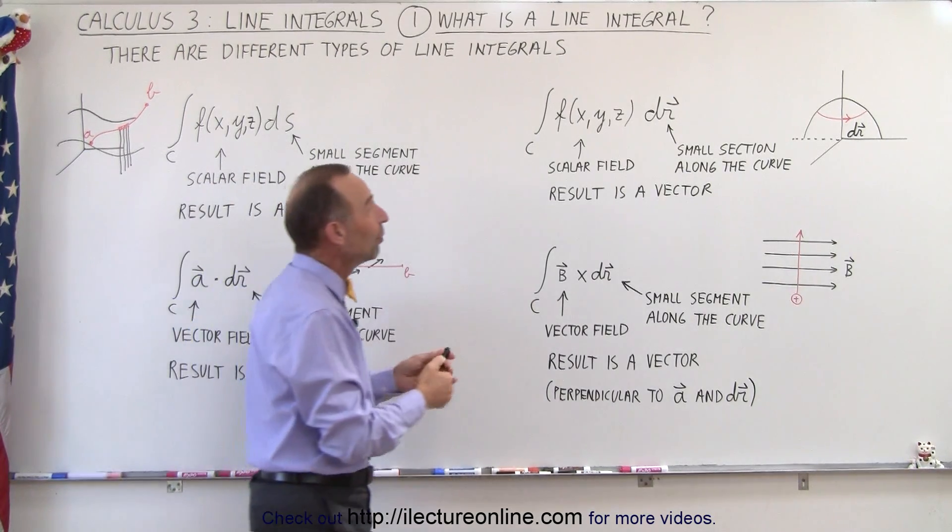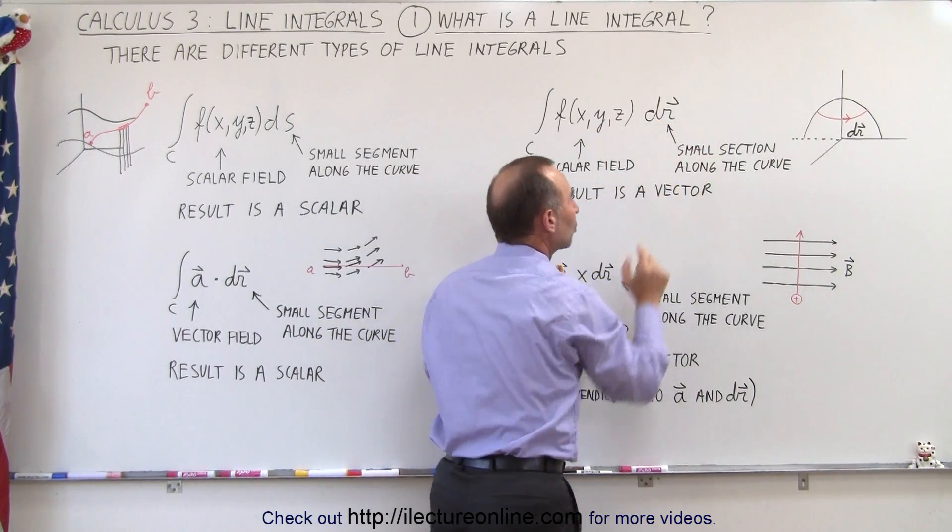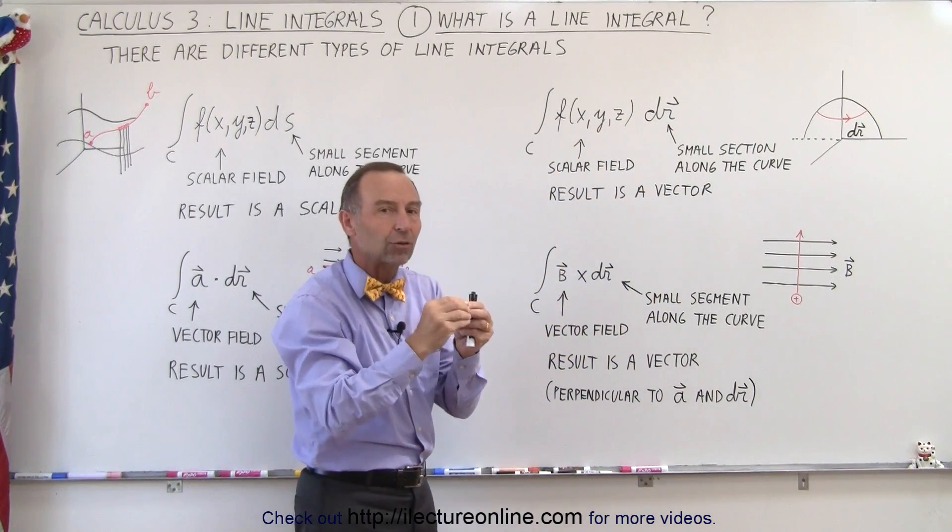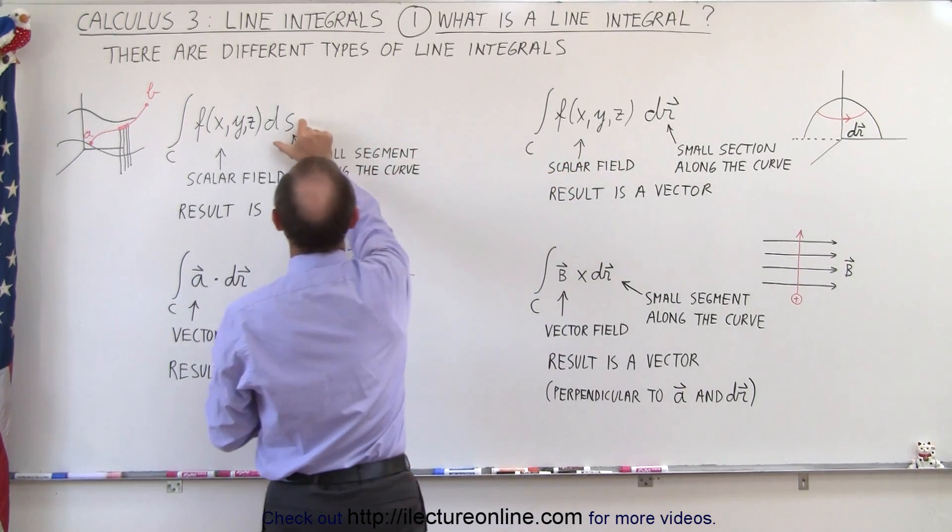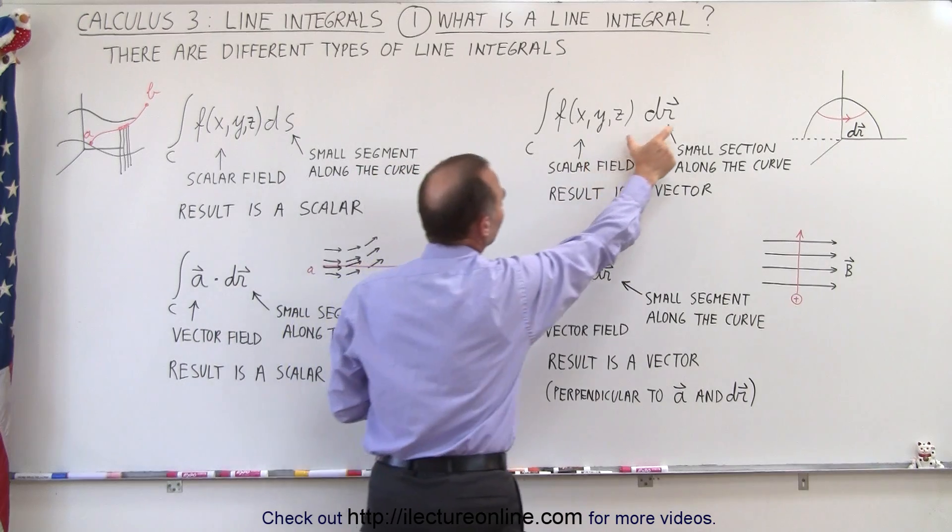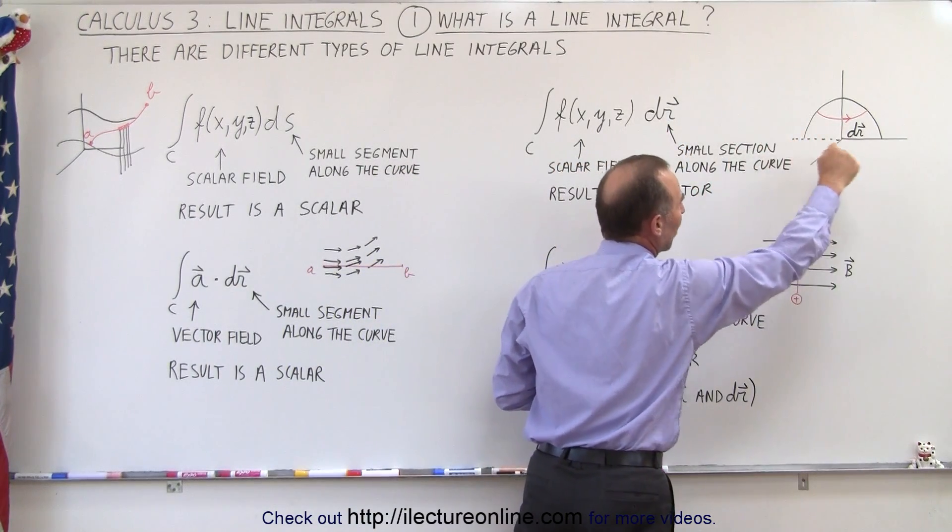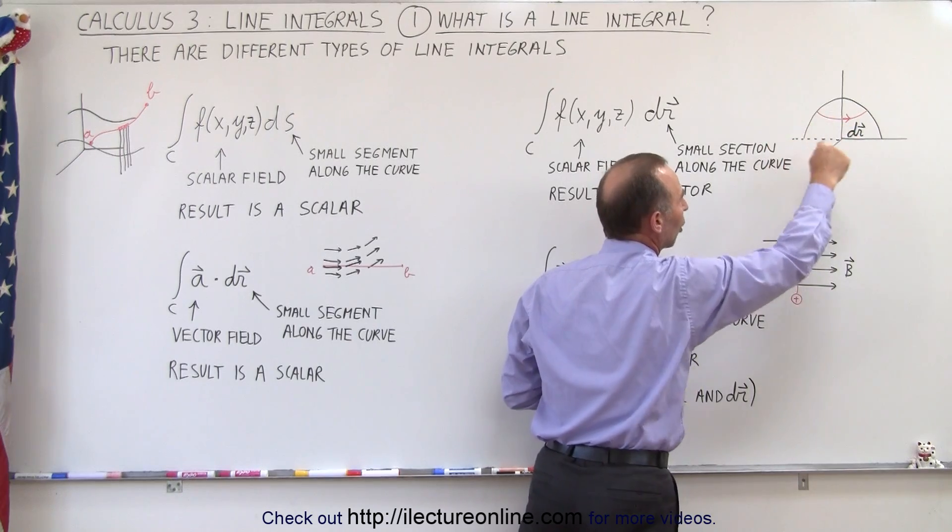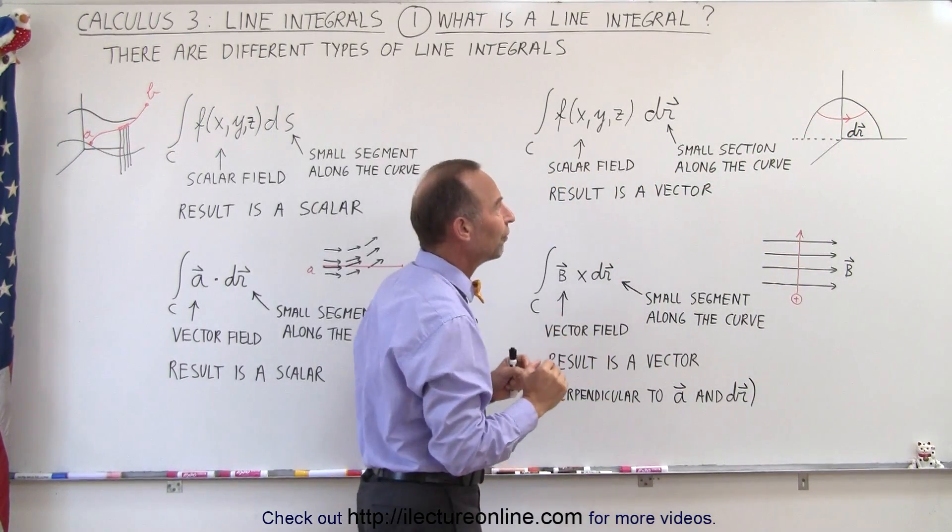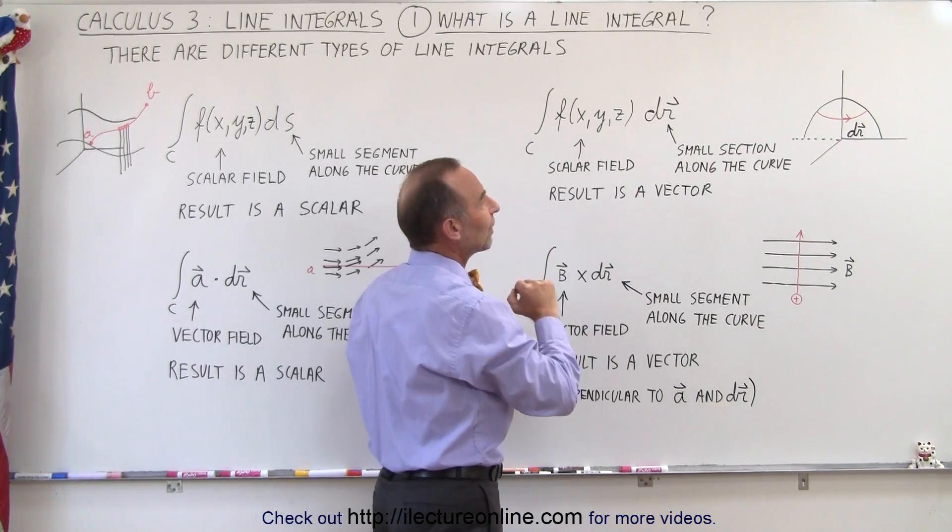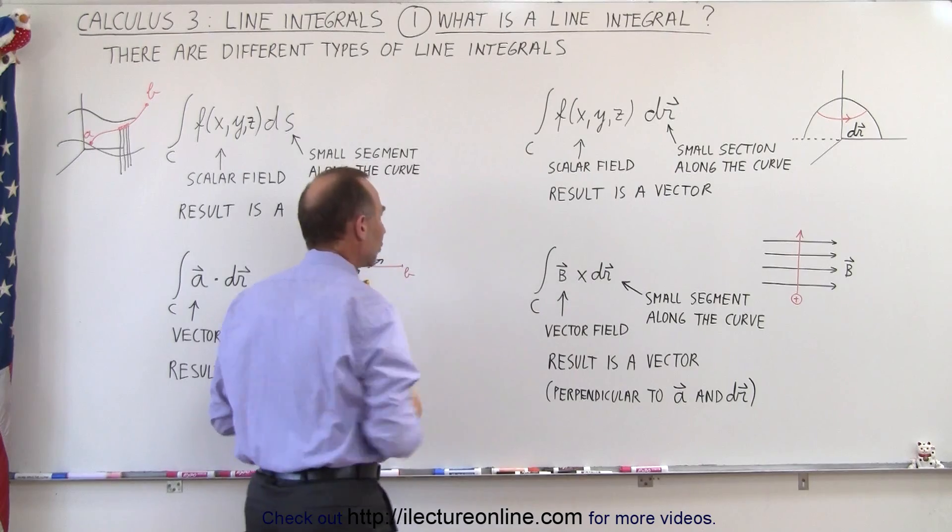We could also have a scalar field where we travel along a path which is defined by a vector, like a direction along that path. So instead of having a scalar small segment, we'll have a vector small segment. For example, let's say we have a surface and we travel in a particular direction along a line on the surface of that surface. We add up all the values of that and the result of that will be a vector quantity rather than a scalar quantity.